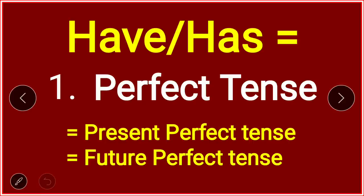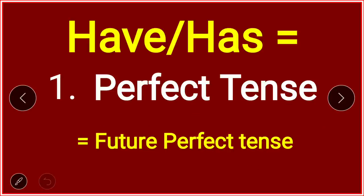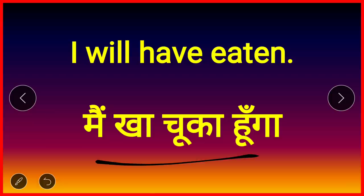Now we move forward to future perfect tense. All the present perfect examples are done. Now let's look at future perfect tense. Example: 'I will have eaten' — main kha chuka hoga / main kha lunga.